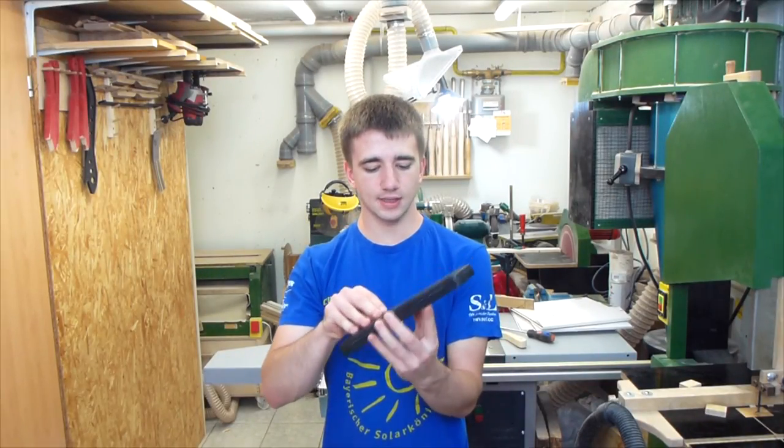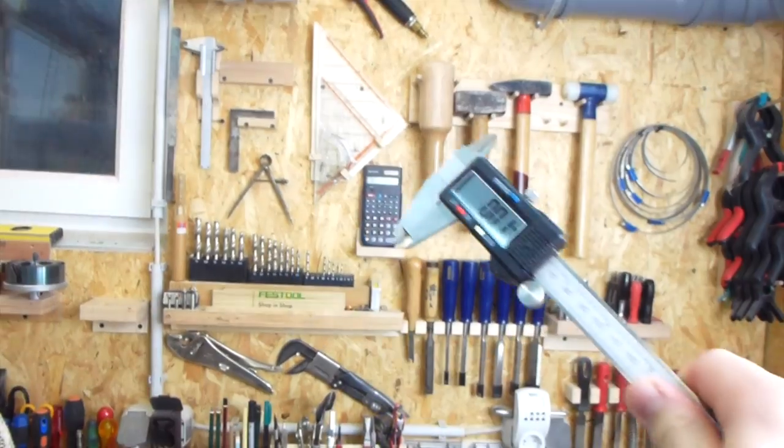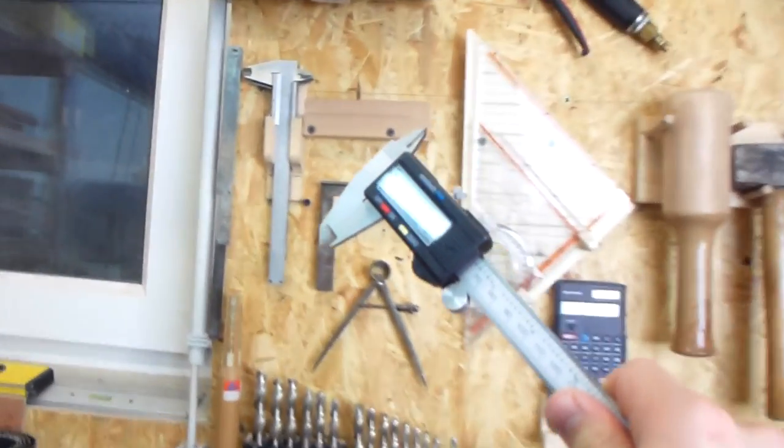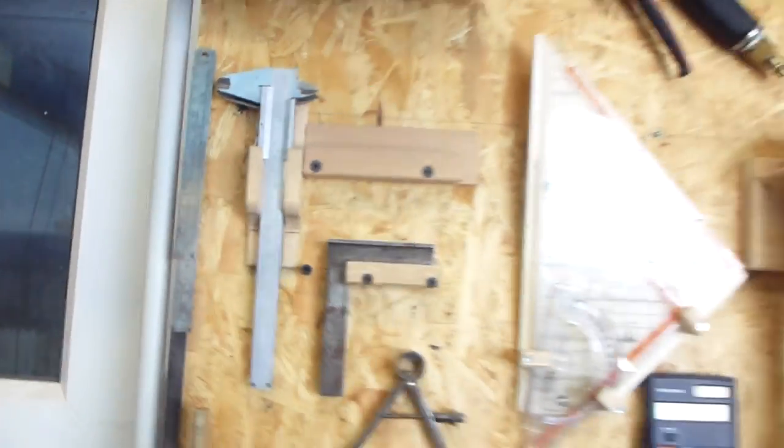Then I got a new digital caliper and it comes with a manual. So who needs a manual for a digital caliper? This now of course needs a place on the tool wall, preferably next to my mechanical calipers. But therefore I have to move some stuff around.